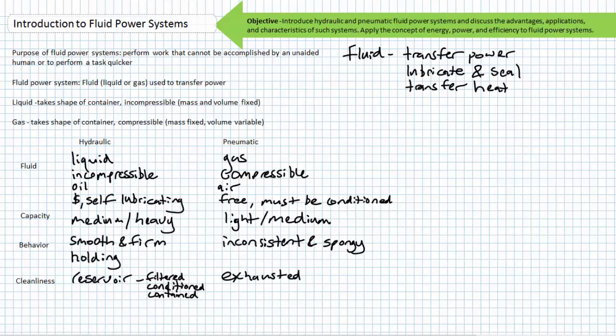Closed hydraulic systems circulate the oil through the system, and returning oil must be filtered, conditioned, and contained in a reservoir. Pneumatic systems, in contrast, simply exhaust the returning air to the atmosphere because air, for the time being, is free and you can always get more.